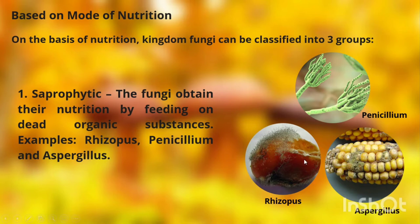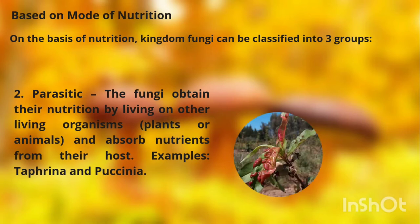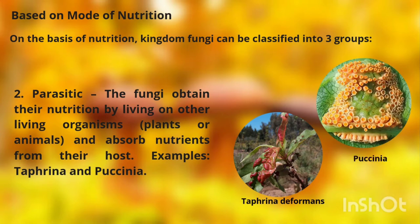Rhizopus is a fungi found on decaying or rotten tomatoes. Penicillium is a microscopic species of fungi. Aspergillus is found on decaying corn or corn cob. The second type is parasitic — fungi that obtain their nutrition by living on other living organisms, plants, or animals, and absorb nutrients from their host. Examples are Taphrina deformans, which causes deformation on the leaves of plants, and Puccinia.